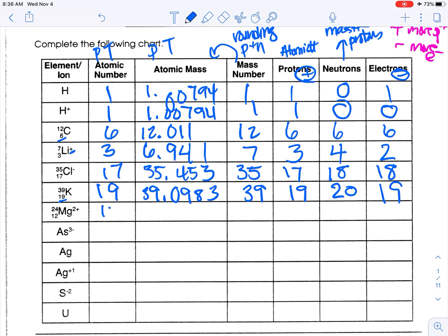Magnesium has 12 protons. The mass is 24.305 — round that to 24. Notice this mass of 24 is also written there on the reference. Protons is 12. 24 minus 12 is 12 neutrons. There's a plus 2 charge, which means there are 2 fewer electrons. So normally we would have 12, but now we have 10 electrons.